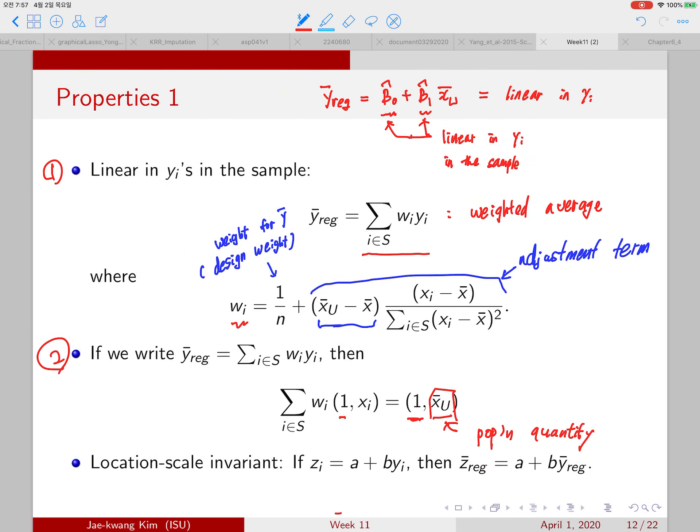The third one, the location scale invariant applied to the regression weight. wi times a plus b yi equals to a times summation of wi plus b times summation wi yi. So that becomes one, that is the regression estimator, so we have this one. So that means that regression estimator preserves the location scale transformation.